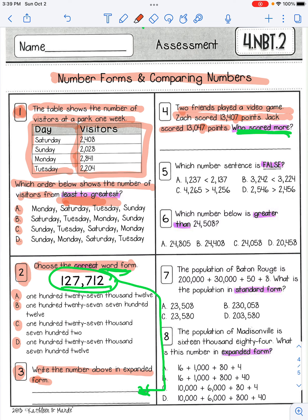Number five. Which number sentence is false? False, okay? So you're going to read your choices. A says 1,237 is less than 2,137. B says 3,242 is less than 3,224. C says 4,265 is greater than 4,256. D is 2,546 is greater than 2,456. So which number sentence is false?